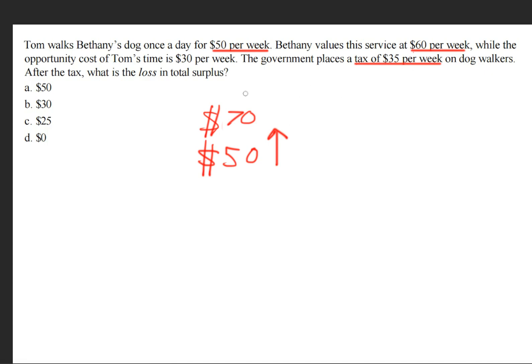But notice that now, because it's $70, Bethany is not going to be pleased. She only values Tom's service for $60. So she's going to say, no way, Jose. You can go find somebody else's dog to walk. So Bethany is out of the market. And Tom, he's also out of the market.